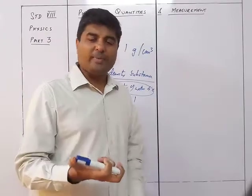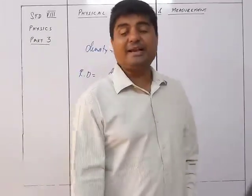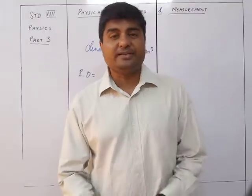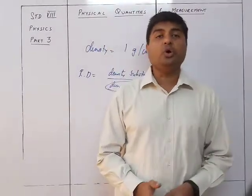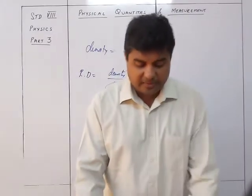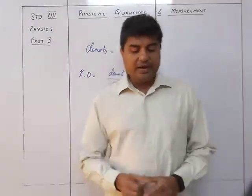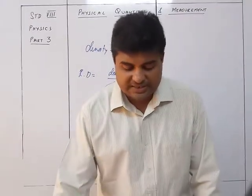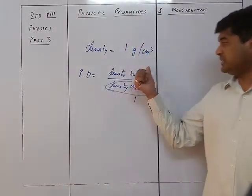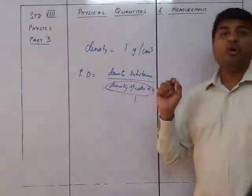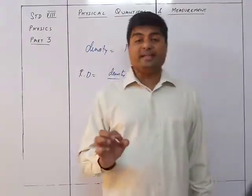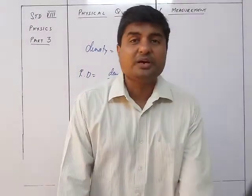That's why we take the relative density of a substance with respect to water — because the density of water is 1 gram per centimeter cube. So the relative density of a substance is the density of that substance divided by 1 gram per centimeter cube.